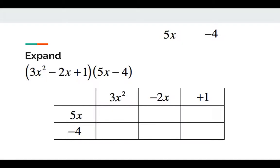After that, we are going to fill in the box one by one with multiplications. 3x² times 5x should be 15x³. 5x times -2x should be -10x². 5x times +1 gives you 5x.